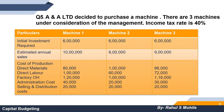The question says: A Ltd. decided to purchase a machine. There are 3 machines under consideration of the management. The income tax rate given is 40%. The initial investment required is 6 lakhs for Machine 1, 6 lakhs for Machine 2, and 6 lakhs for Machine 3. All three machines have the same cost of 6 lakh rupees, but the expenses are different.